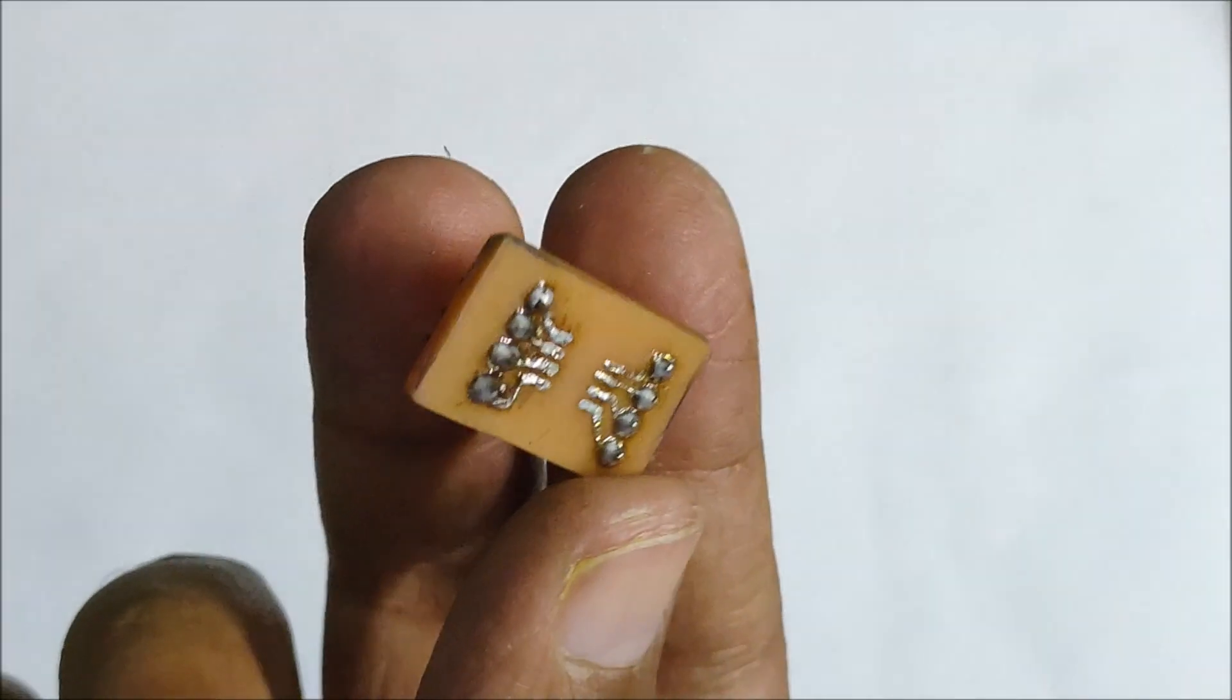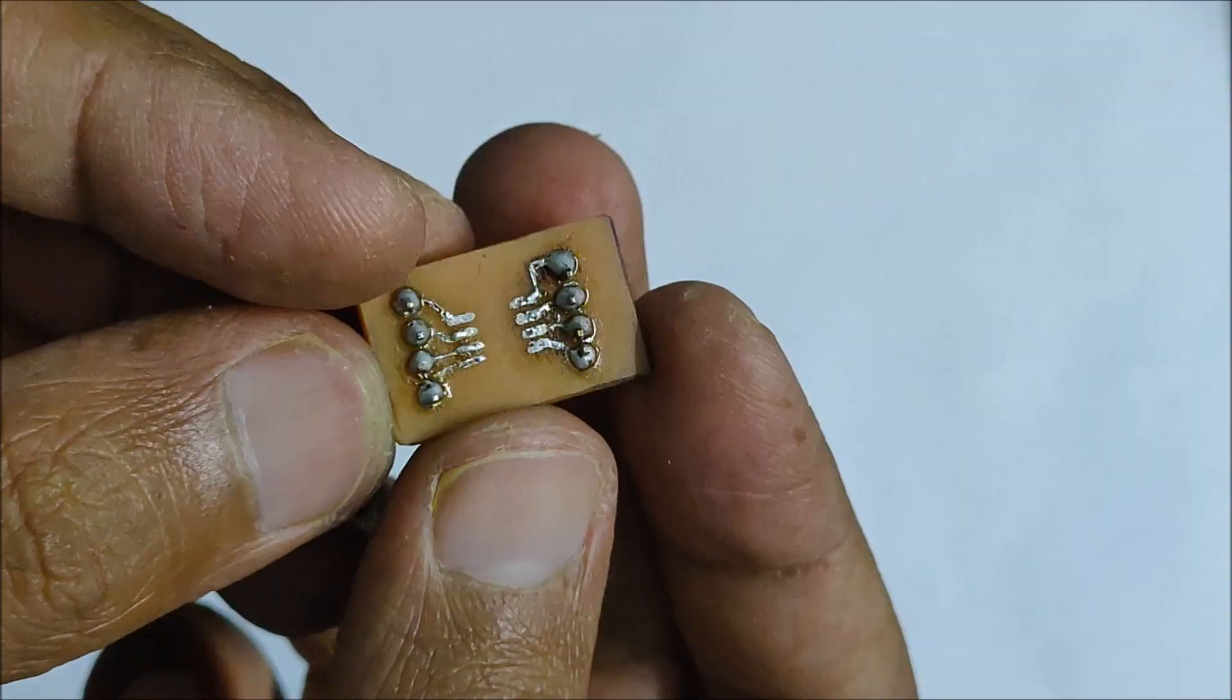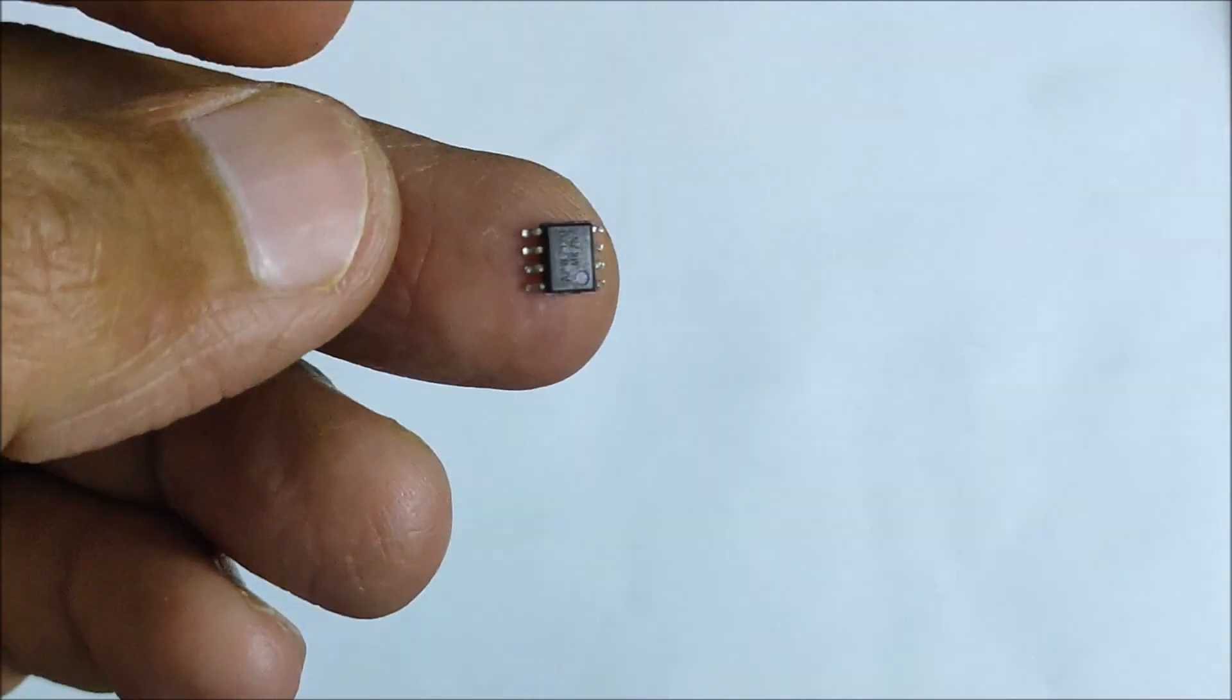Next, I soldered male headers on both sides of the board and tinned the entire traces so as to compensate for the poor etching process of the permanent marker.